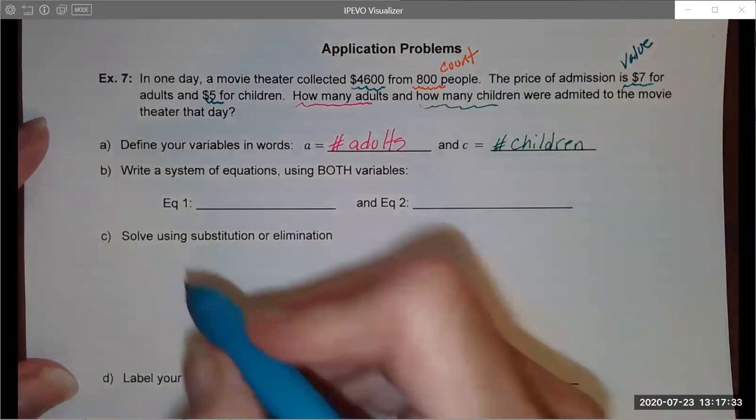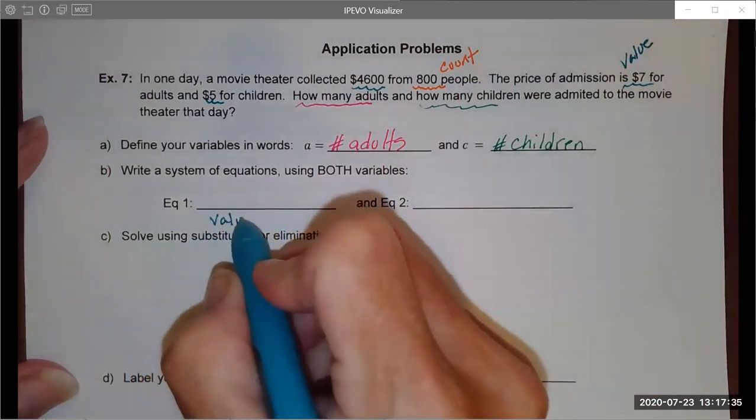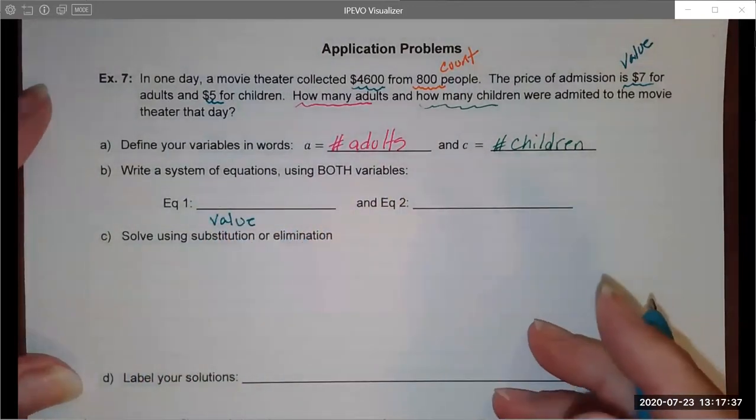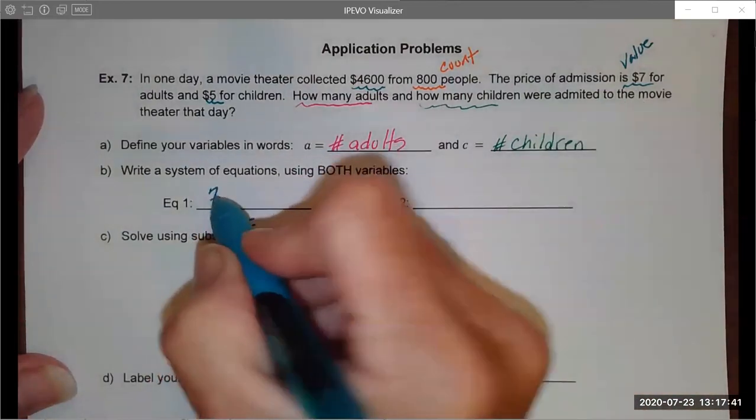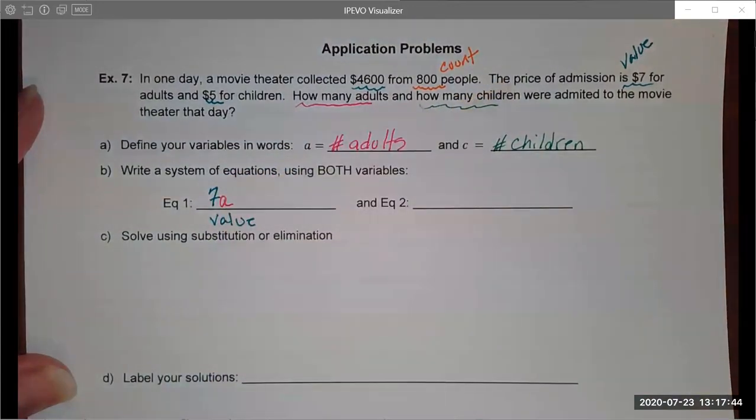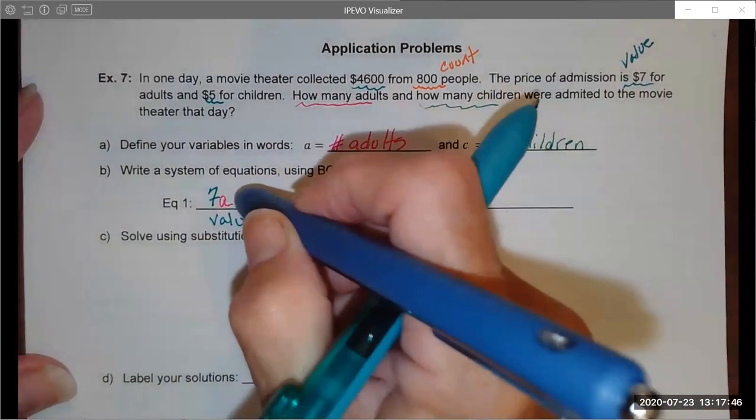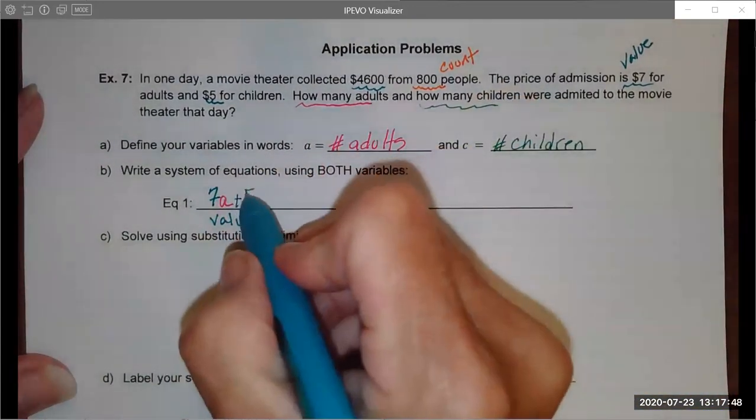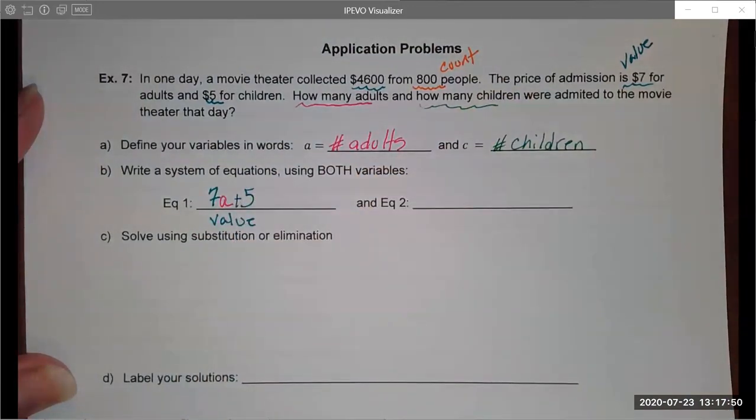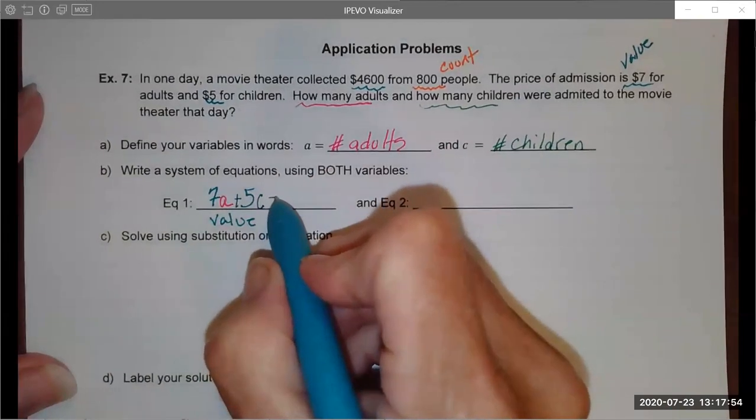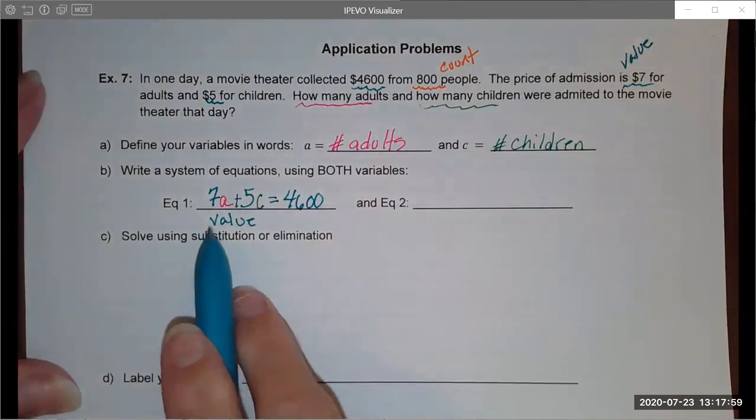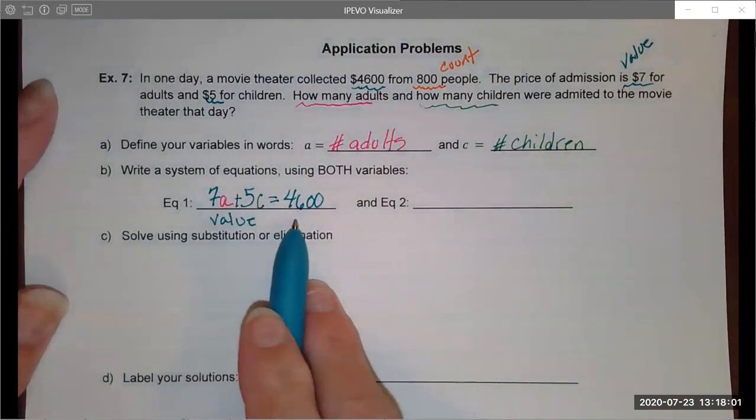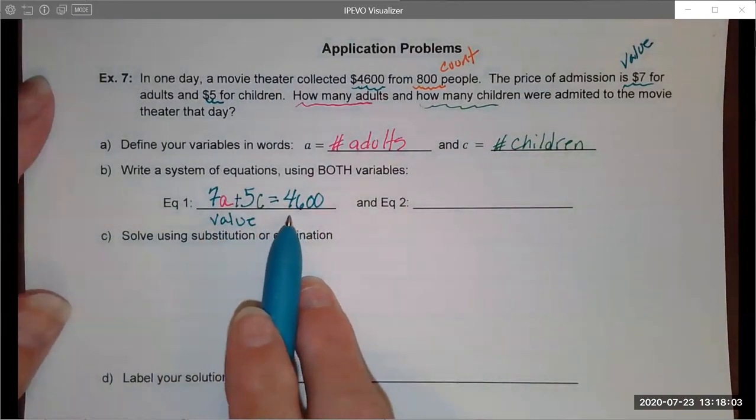One of our equations is going to be the value equation, and this is typically pretty easy for students to write. I know that it's $7 for an adult, so 7A, and I'm going to add to that $5 for each child, so 5C. All together this needs to add up to $4600. So you'll note every number in this equation has a dollar sign involved.